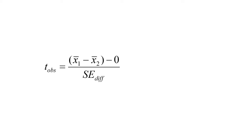I think it's important for you to understand how it got there. Hypothesis tests are always: what we found in our data minus what the null hypothesis says we should find on average in our data. It's always our observed value minus the null hypothesis expected value, and then all of that standardized into a t or z-type score by dividing by the standard error.